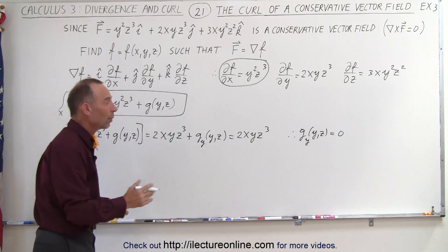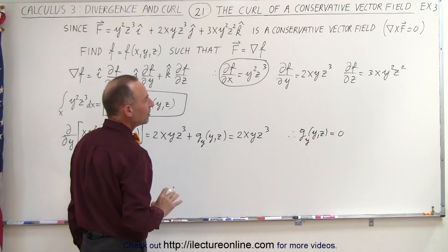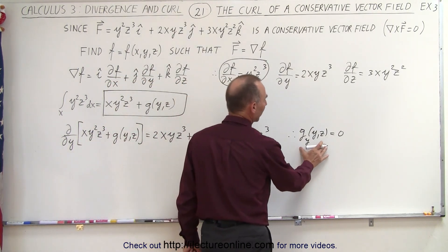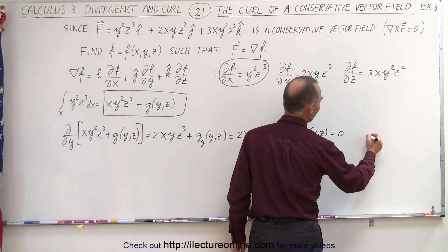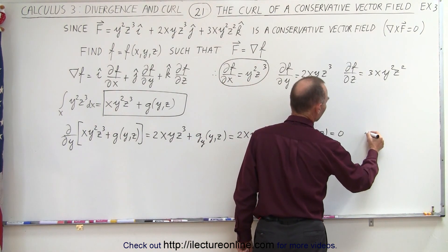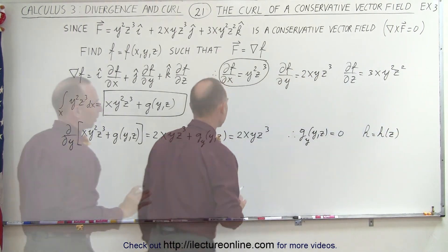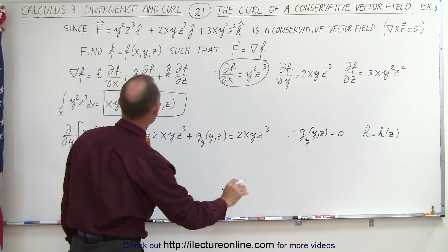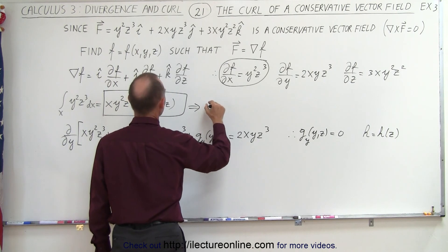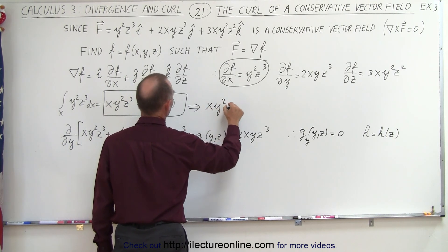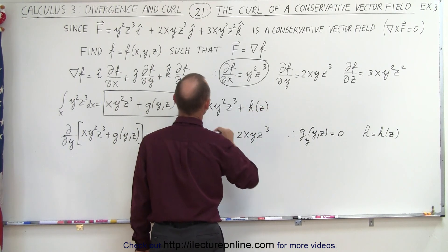So there is no function of y and z — when we integrate that, we just get a constant. But we could still end up with a function of z when integrating with respect to z. So we have one more possible function; let's call it h, which is a function of z only. That means the function cannot be any more than xy²z³ plus a possible function of z only.